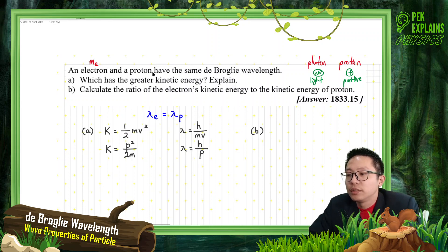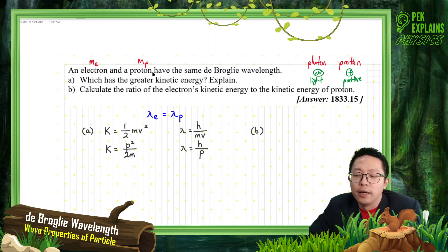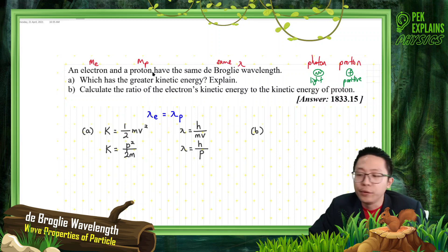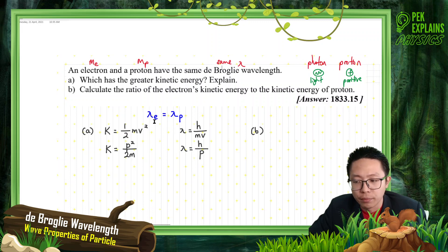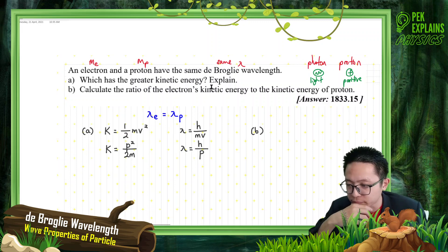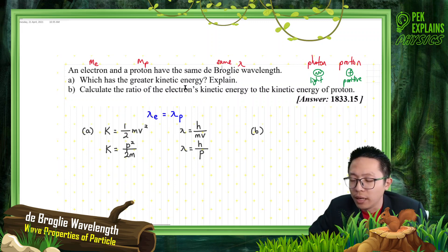So this is the mass of proton. And they have the same De Broglie wavelength, so lambda E equals lambda P — the wavelength of the electron equals the wavelength of the proton. Now, which one has a greater kinetic energy? Explain.